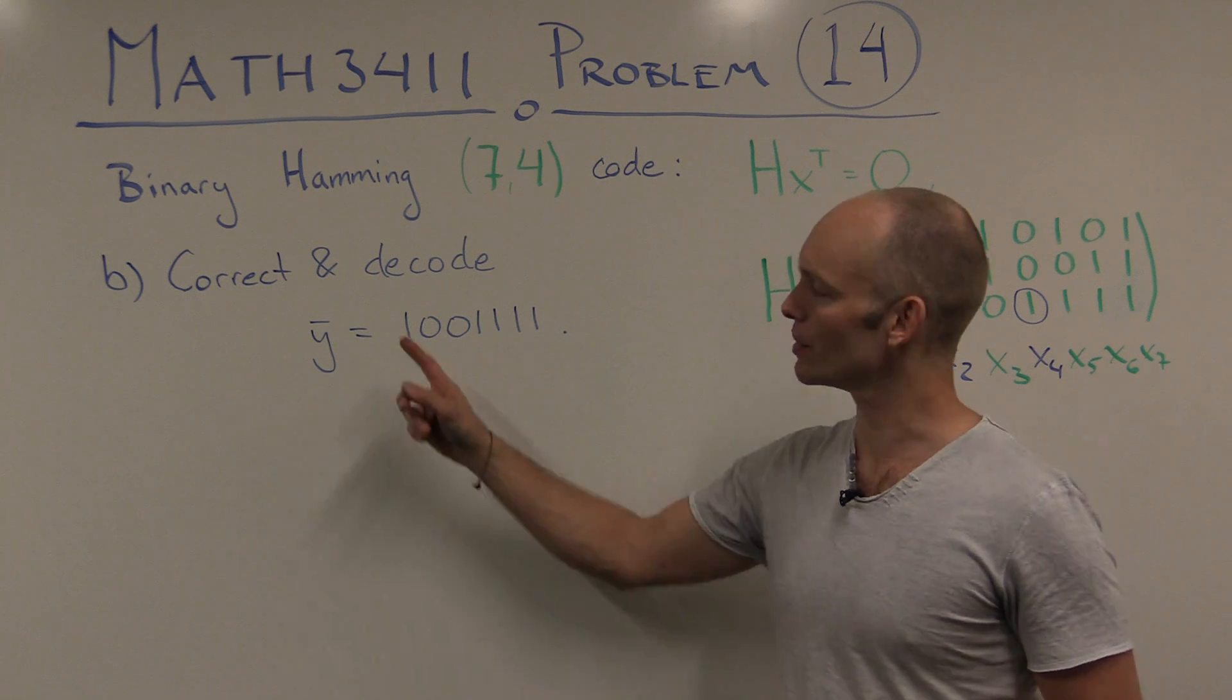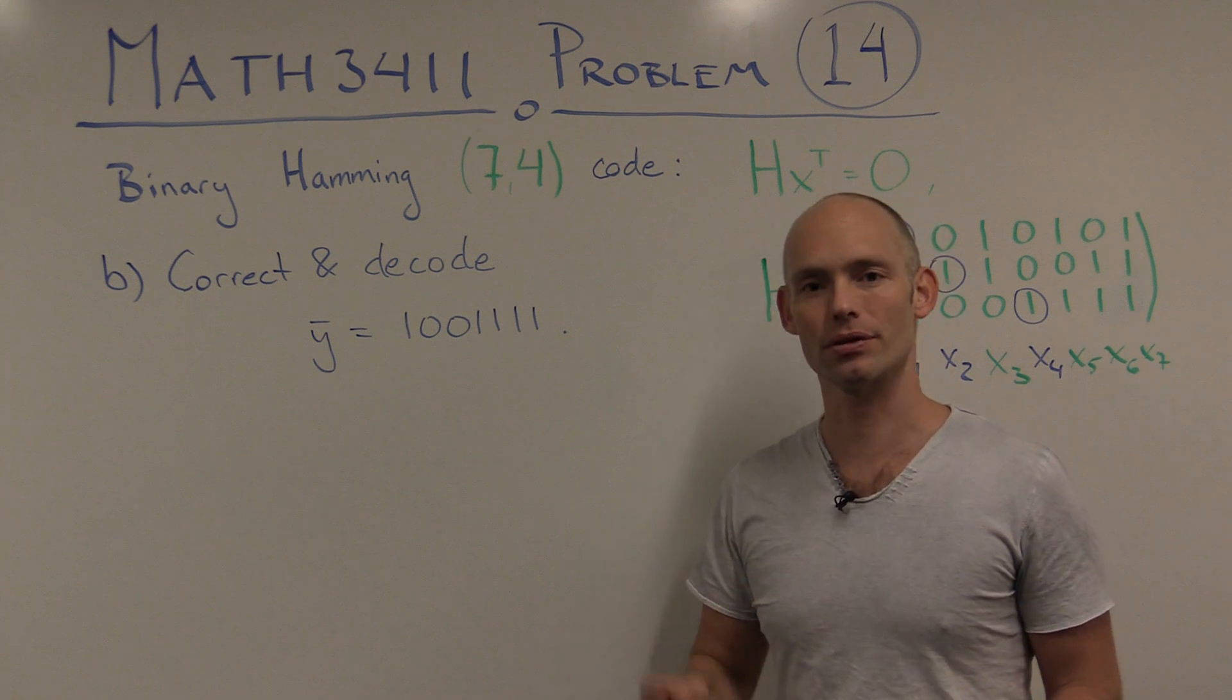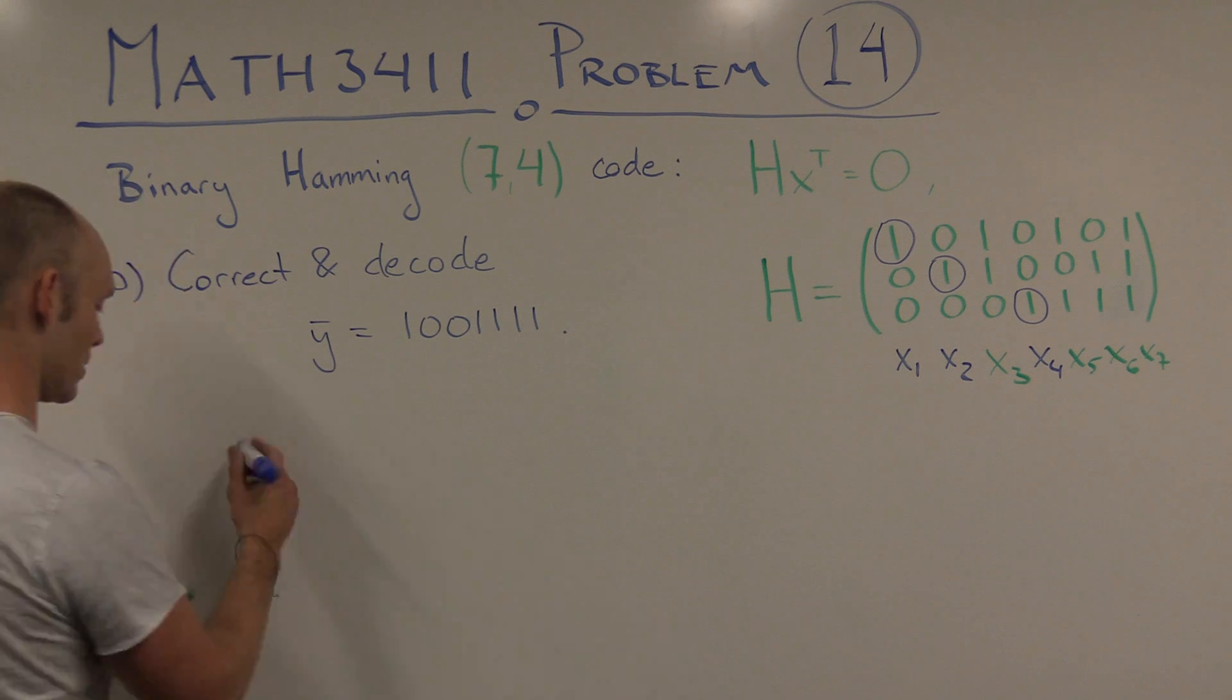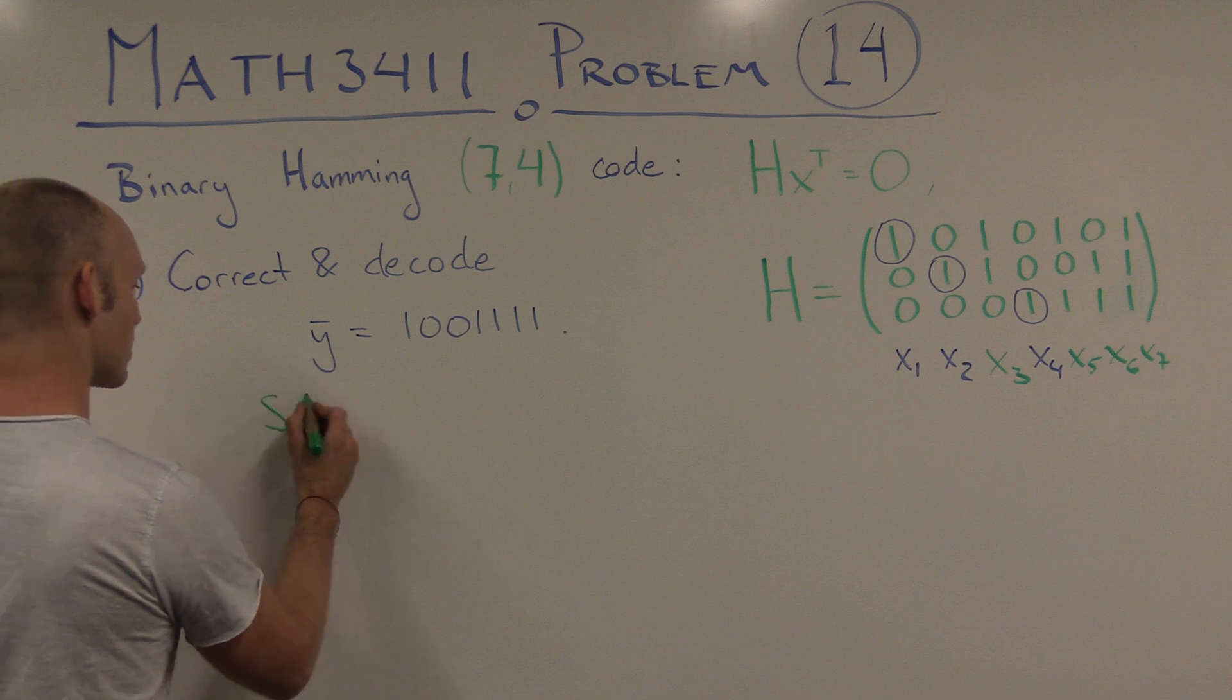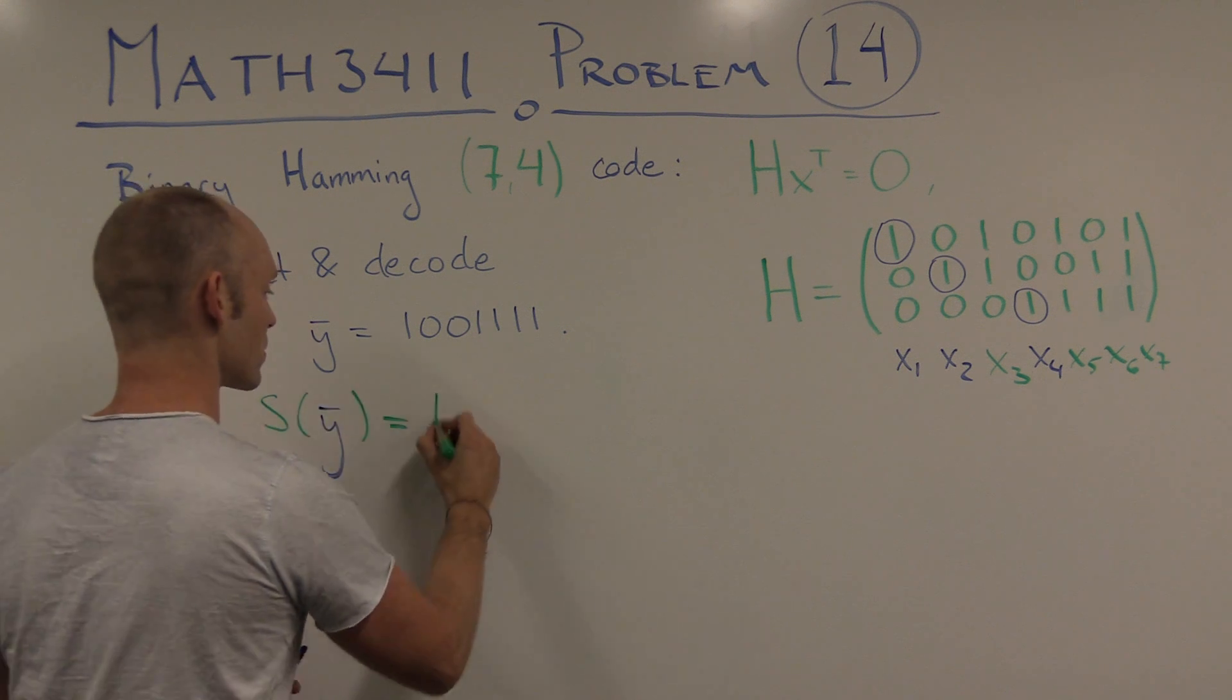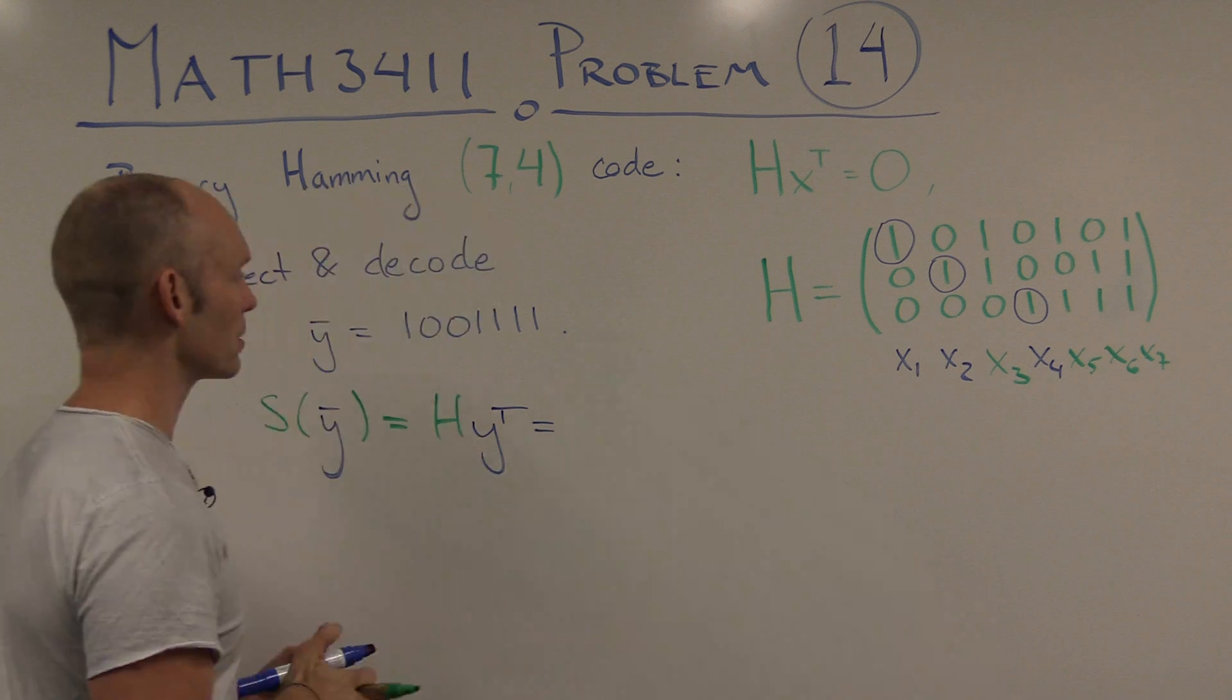Okay, now in part b, we have to correct this received message, and then decode it to get, hopefully, the original message, assuming that there's only at most one bit error. So what do we do? Well, we just calculate the syndrome of this word. So we have S of y, which is equal to h of y transpose.